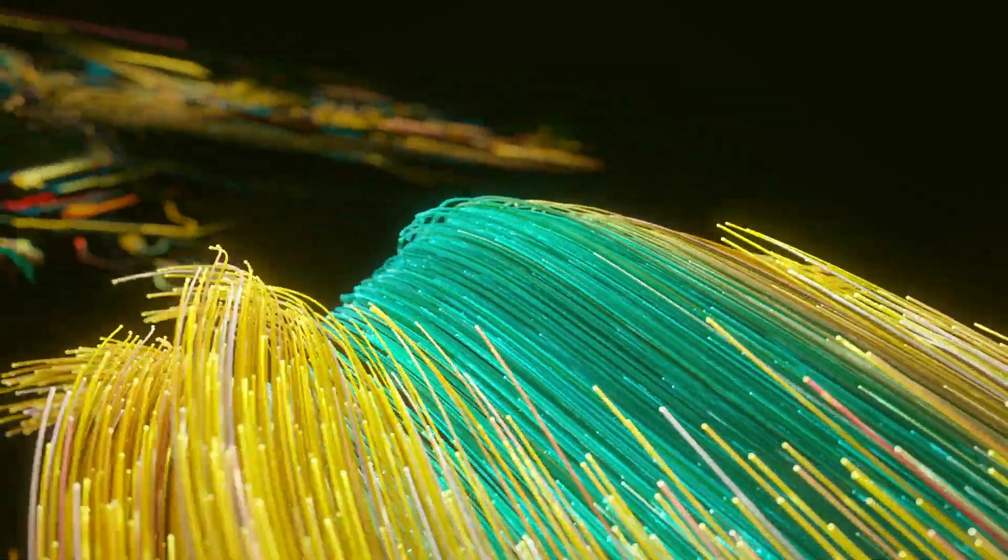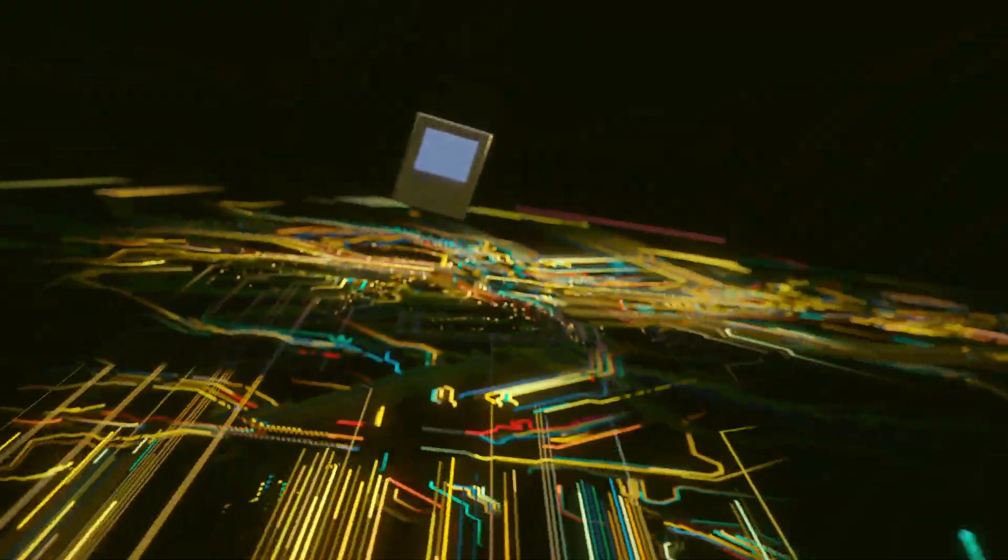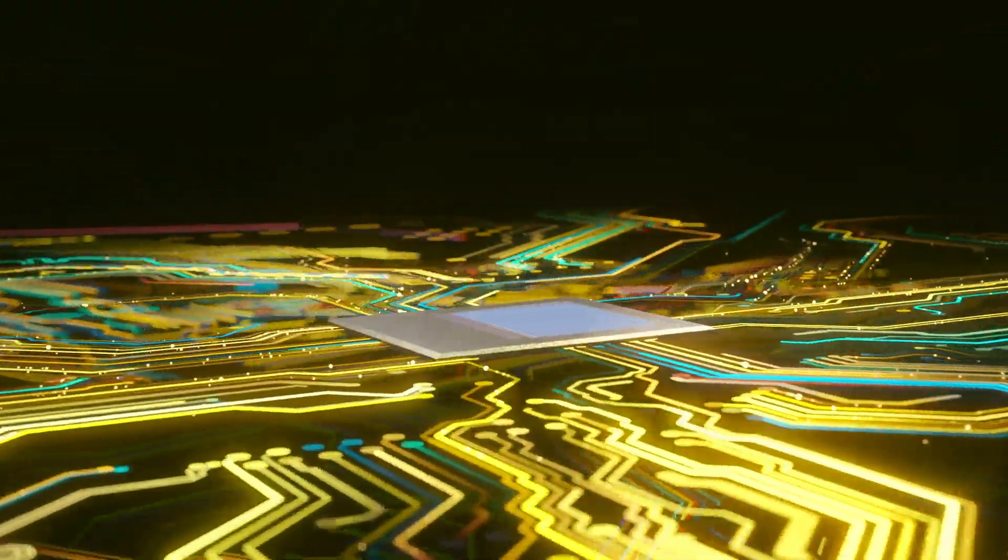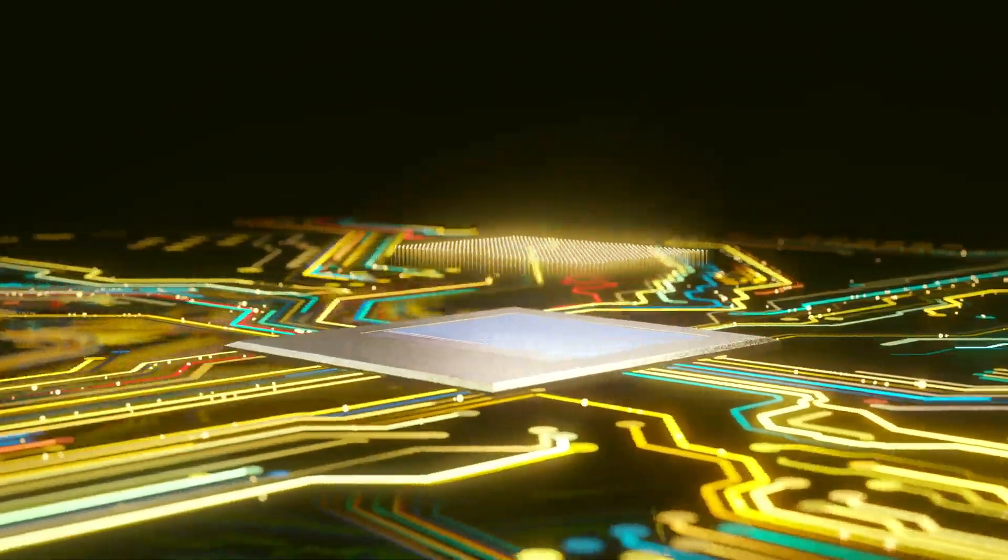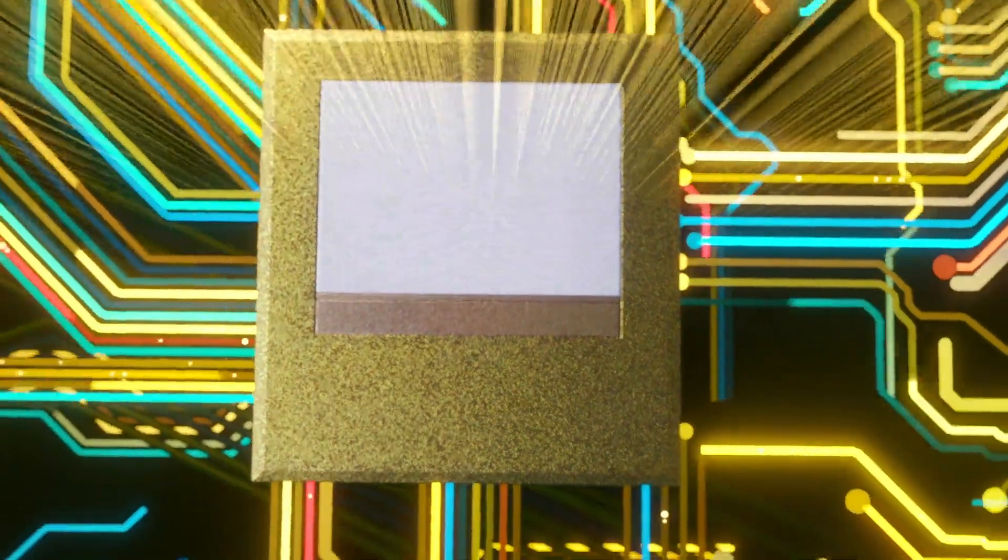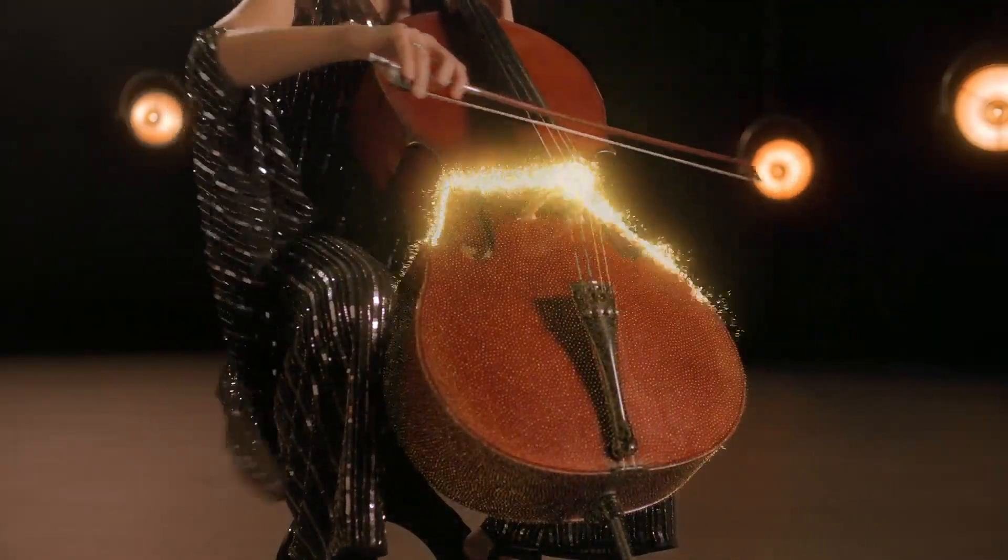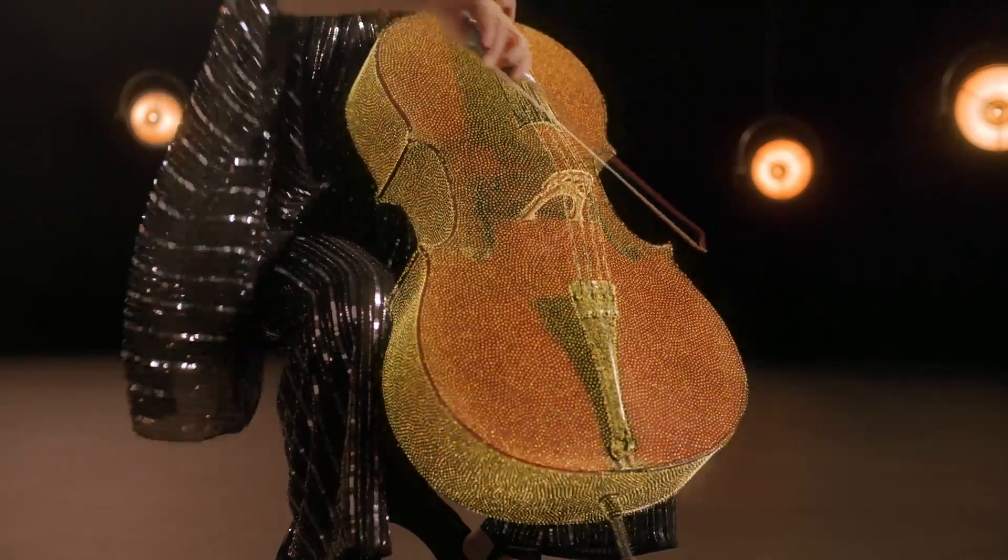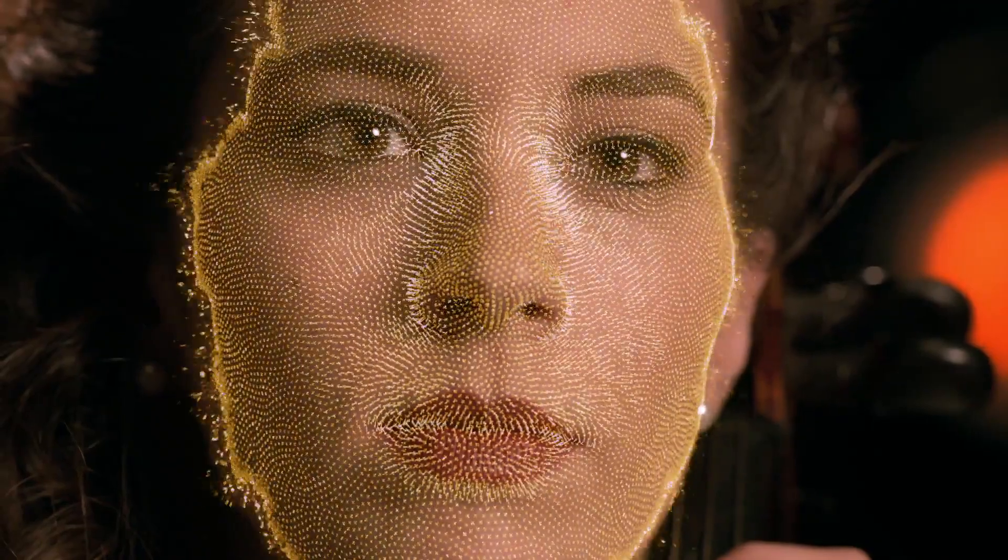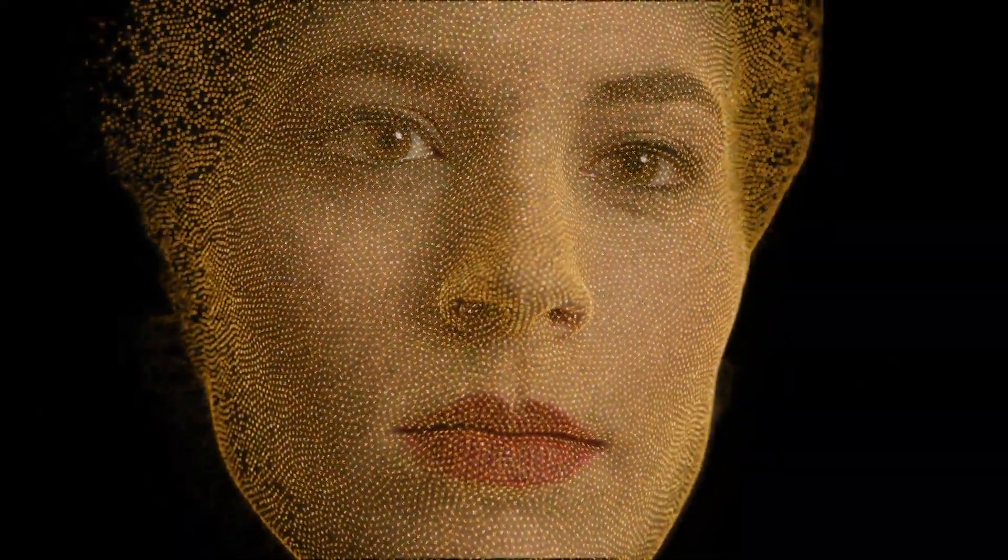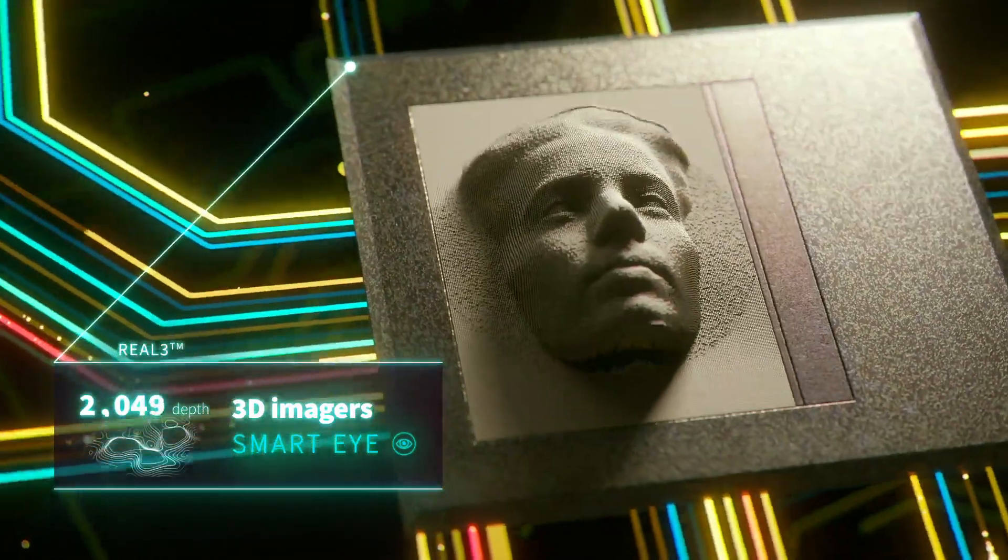Similar to our eyes, the time-of-flight based 3D imager uses the time of the light flying to create a 3D map of objects, rooms and people in real time. Giving eyes to things for face authentication and much more.